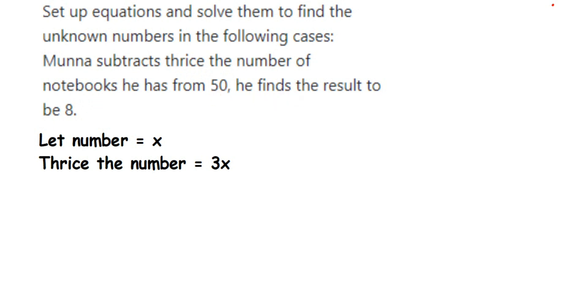Now we have to form an equation and then solve. What is given? Munna subtracts thrice the number, so we don't know the number, right? Whenever we don't know any number or the value we have to find out, we're going to assume a variable. Here we don't know the number and the complete equation is based on this number, so I'm going to assume the number to be x.